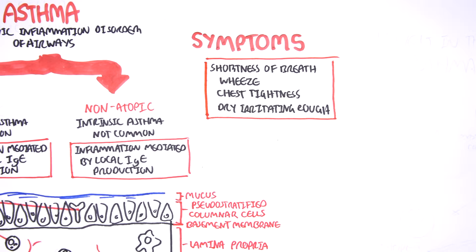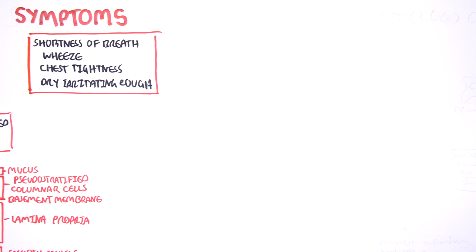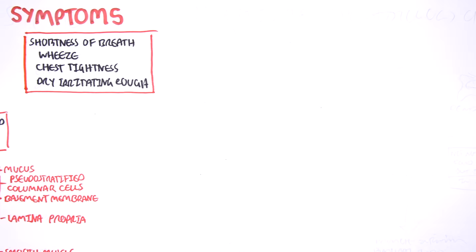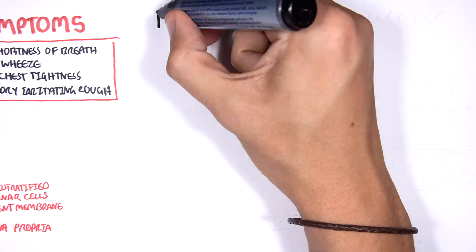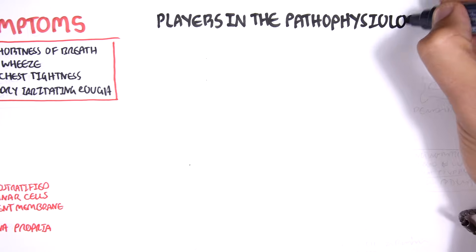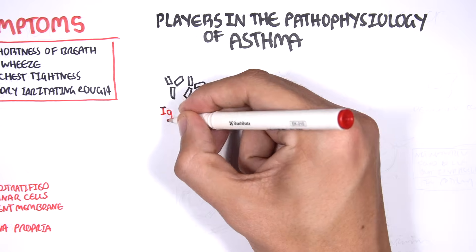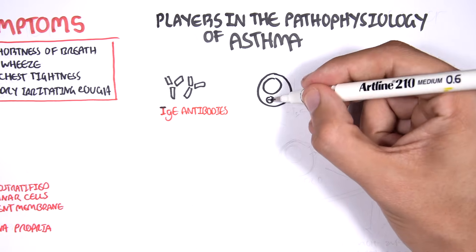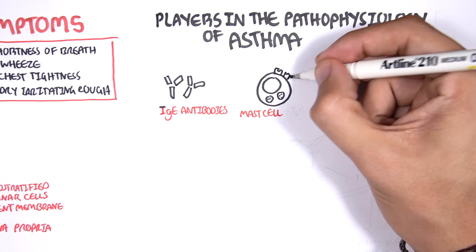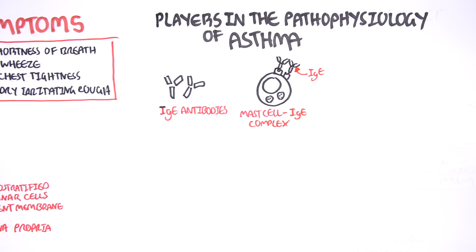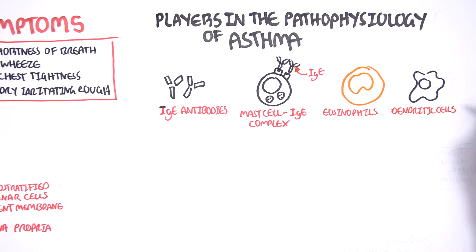Now let us look at the pathophysiology. Key players include IgE antibodies, which can bind to receptors on mast cells forming a mast cell-IgE complex. The mast cell-IgE complex will recognize allergens and begin releasing large amounts of histamine. Other important players in the pathophysiology include eosinophils, dendritic cells, and T-helper cells.